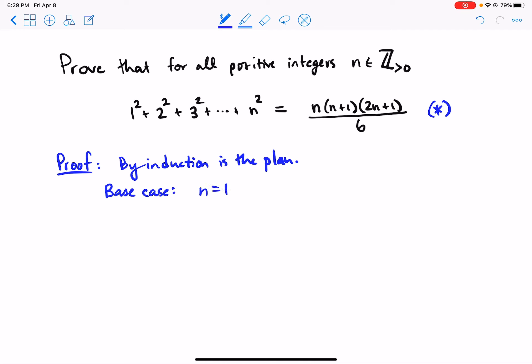Let's check n equals 1. Well, we have 1 squared. And we're going to see if that's equal to 1 times 1 plus 1 times 2 plus 1 divided by 6. That is 1 times 2 times 3. And yeah, that's true. n equals 1, star is true. Okay, now that was the base case. We're done with the base case.